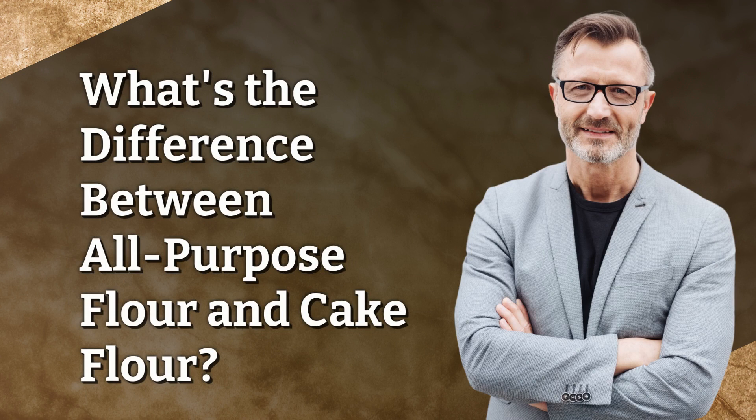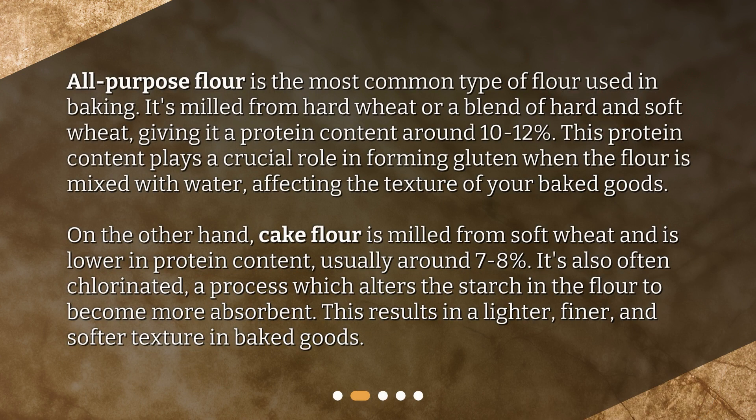What's the difference between all-purpose flour and cake flour? All-purpose flour is the most common type of flour used in baking. It's milled from hard wheat or a blend of hard and soft wheat, giving it a protein content around 10 to 12%. This protein content plays a crucial role in forming gluten when the flour is mixed with water, affecting the texture of your baked goods. On the other hand, cake flour is milled from soft wheat and is lower in protein content, usually around 7 to 8%. It's also often chlorinated, a process which alters the starch in the flour to become more absorbent. This results in a lighter, finer, and softer texture in baked goods.